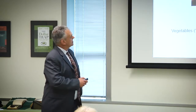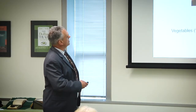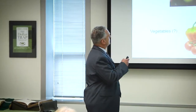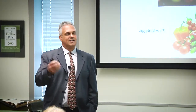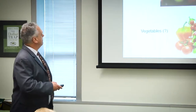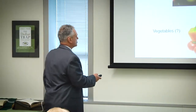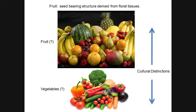Let me begin with a couple of pictures of some fruits and vegetables, or at least things we call vegetables. Botanically, a fruit is typically derived from a floral tissue and it contains a seed. So if you're eating something with seeds, you're eating a fruit. Although some of these vegetables actually have seeds — cucumbers, peppers — these are things that culturally we use as vegetables, we call them vegetables for that reason. But in fact, botanically, they're fruits.